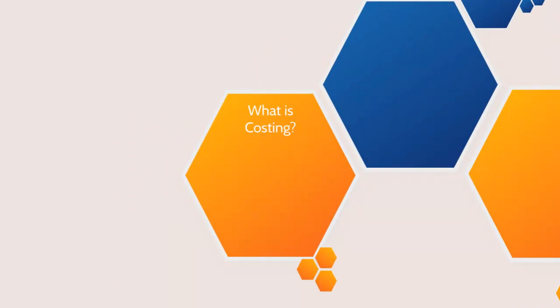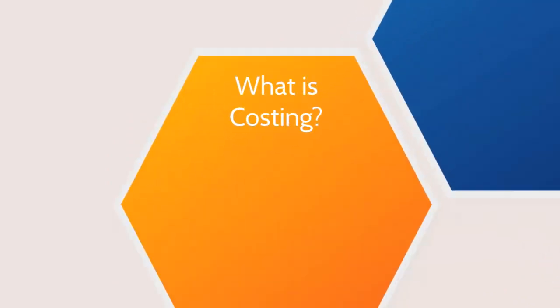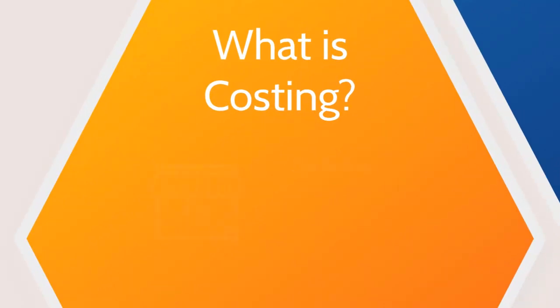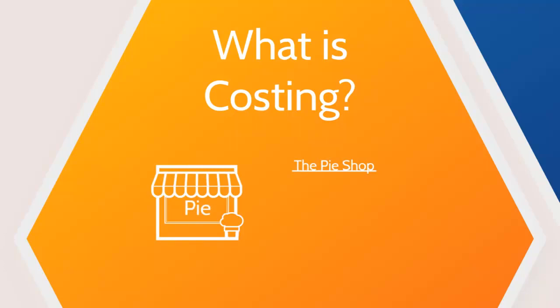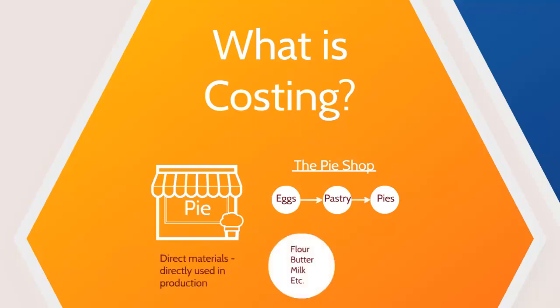Let's think about when we buy the pie and specifically the local pie shop where we might buy it from. We all know that the best bit of a pie is the pastry, and the key to a good pastry is nice fresh eggs. So the local pie shop buys eggs which go into making the pastry, which is then used to make the pies. Along with the eggs, the pie shop needs other ingredients like milk, flour and so on — these are collectively known as the direct materials. The cost of a pie will include the cost of the ingredients used in making it.